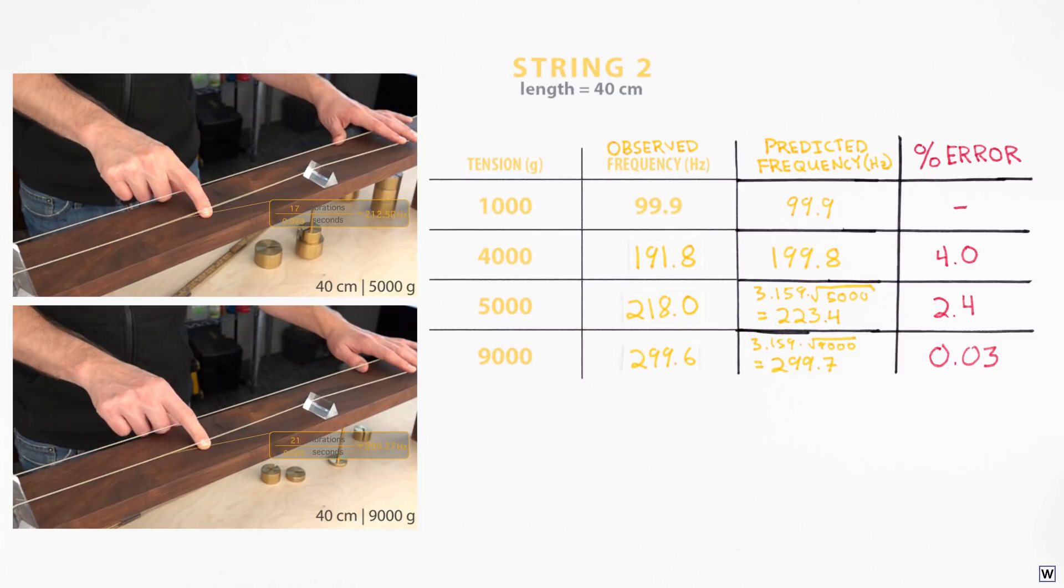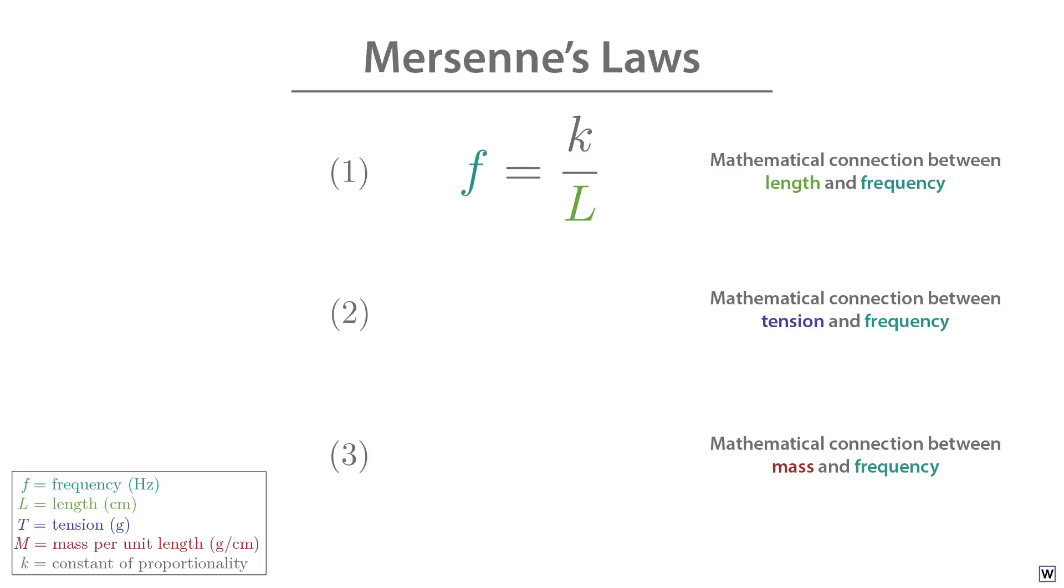We have found Mersenne's second law. One more hidden connection between mathematics and the physical world. The frequency of a vibrating string is directly proportional to the square root of its tension.